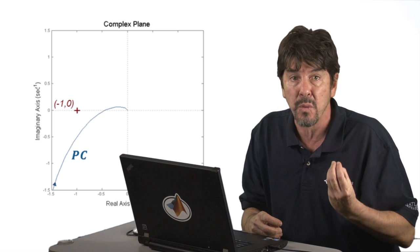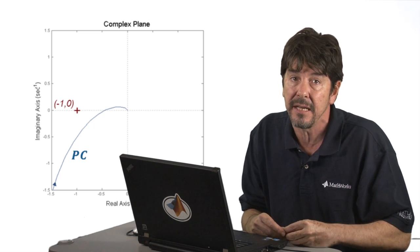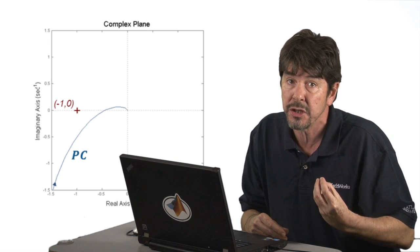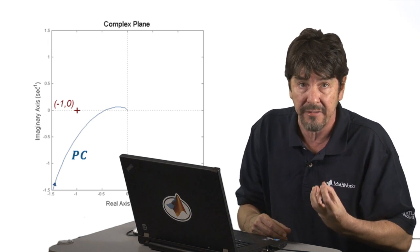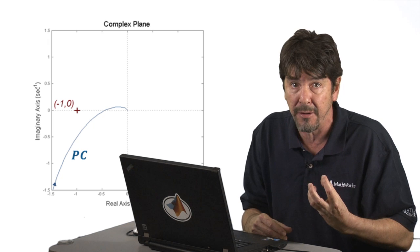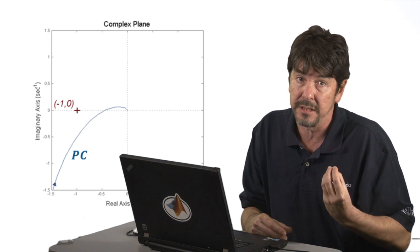So that minus 1 comma 0 is the critical stability boundary, and we want to make sure that our open-loop design, whatever it is, stays far enough away from it. The question is how far away?